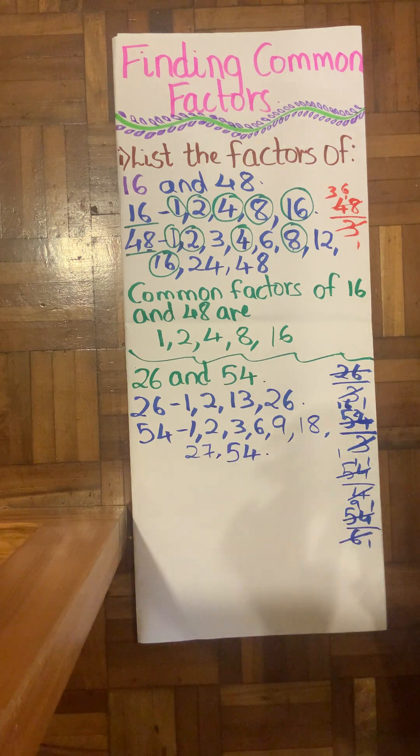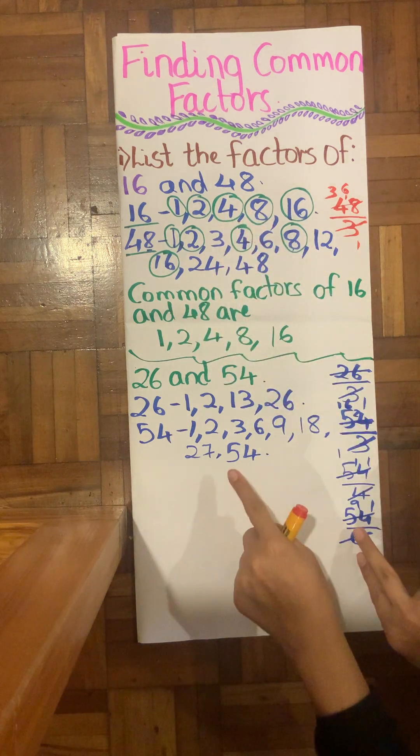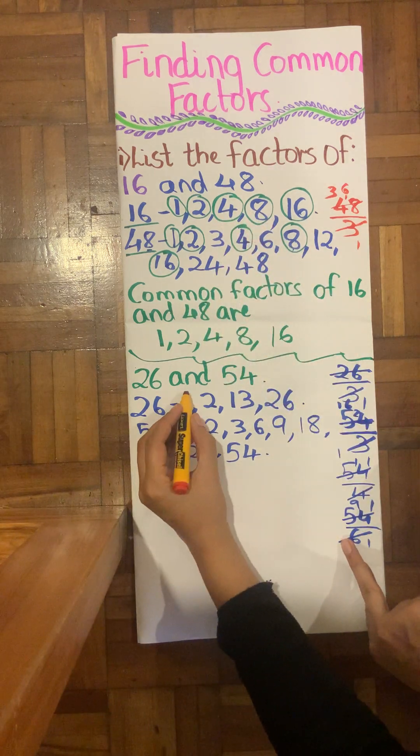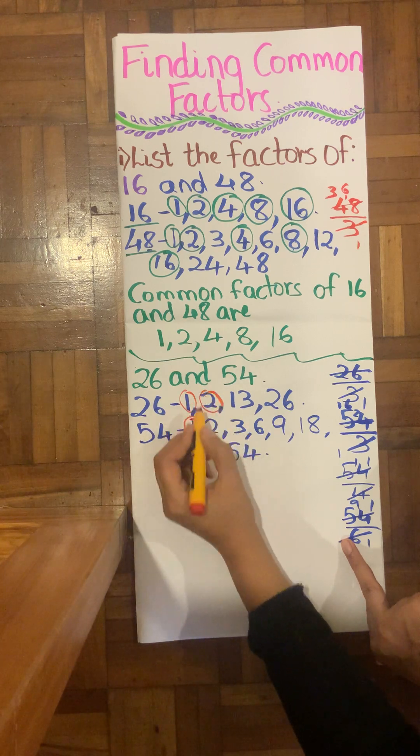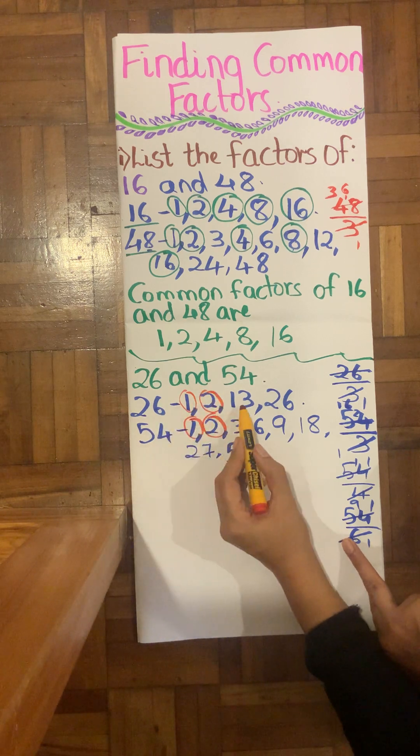So let's go ahead with finding the common factors. In order to find that, like I did in my previous example, I will do the same here. So I will circle my common factors. 1 and 1 are common. 2 and 2 are common. Is 13 here? No.